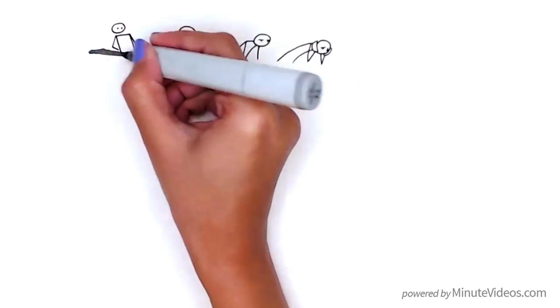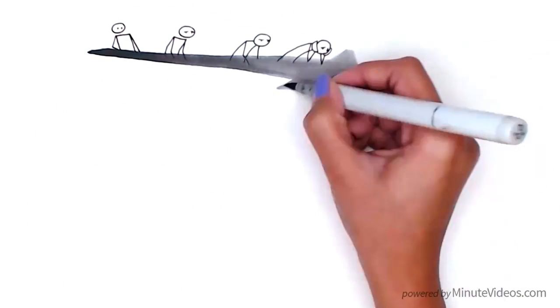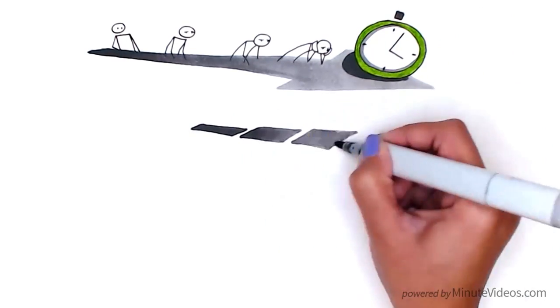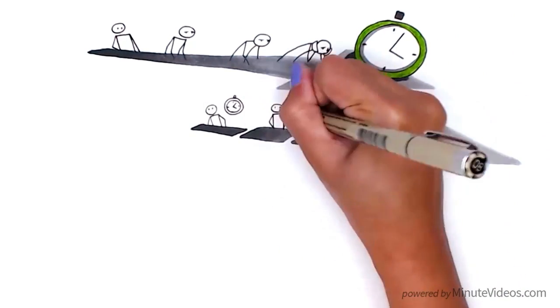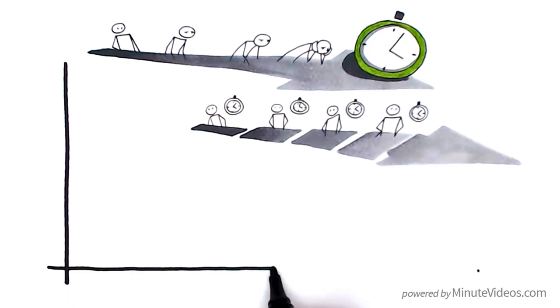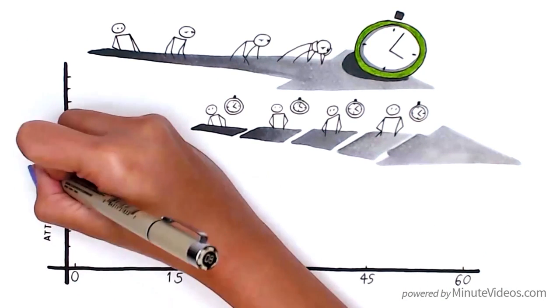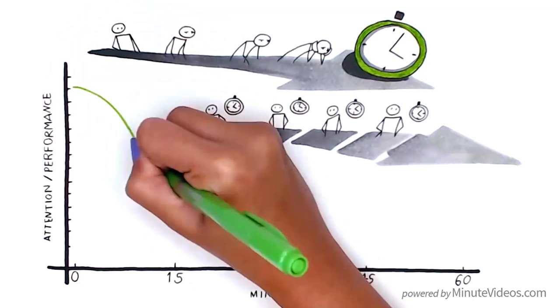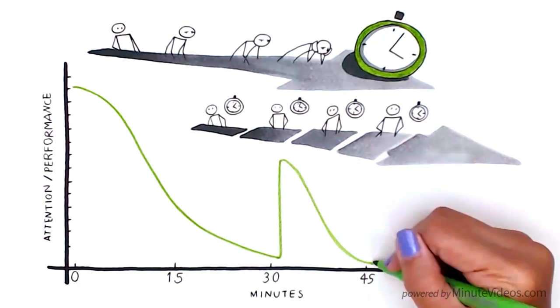One method to fight boredom and keep attention high is to reduce the session length. You can break them up into segments with small breaks in between. Even if that does not mean students get back to the initial high, studies show that whenever a new section begins, attention is lifted dramatically before it drops again.